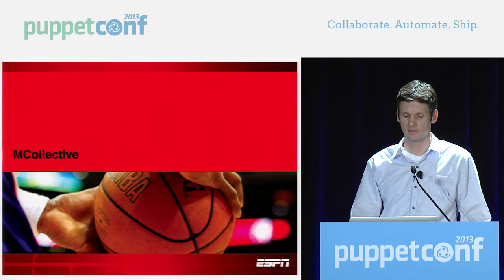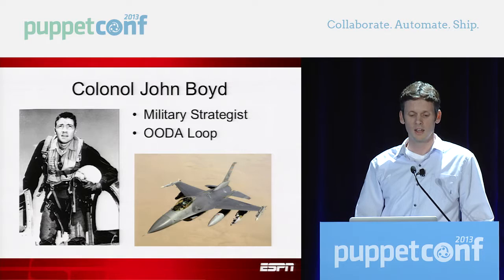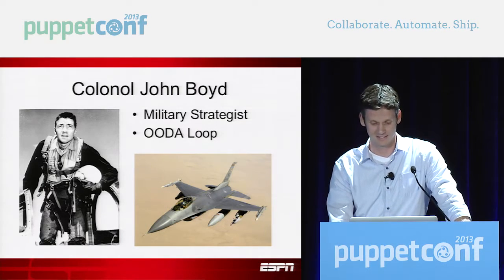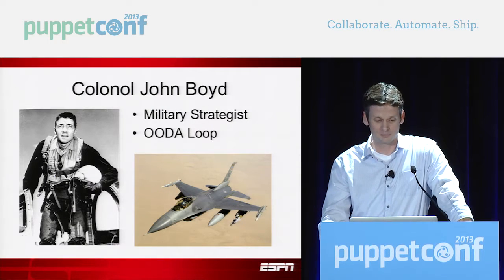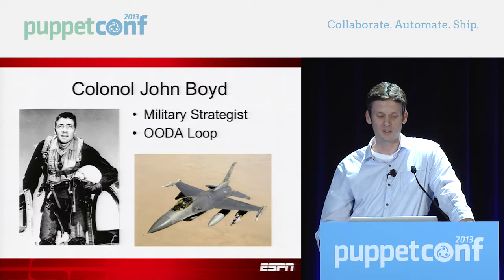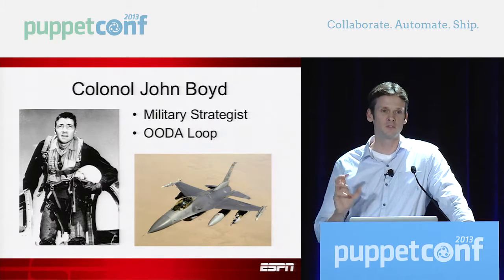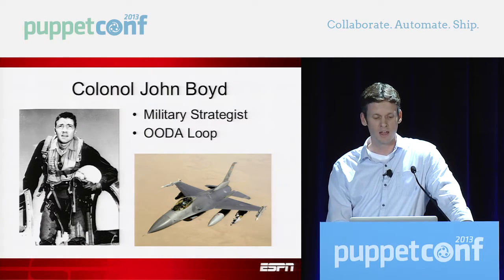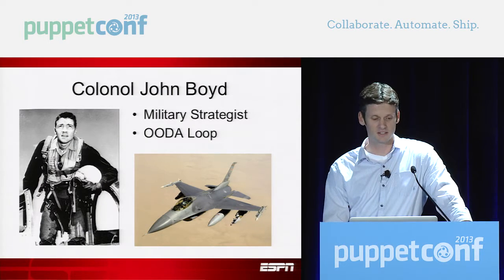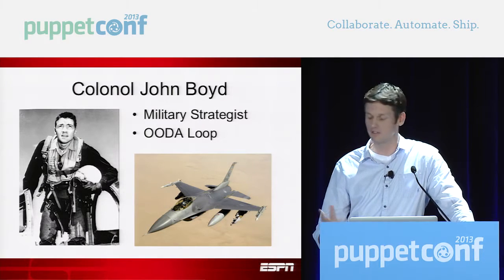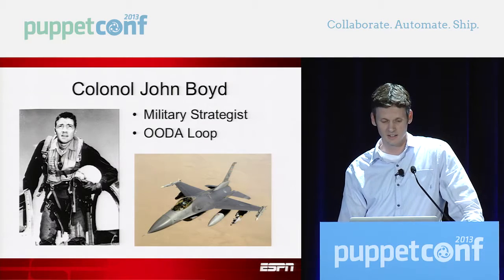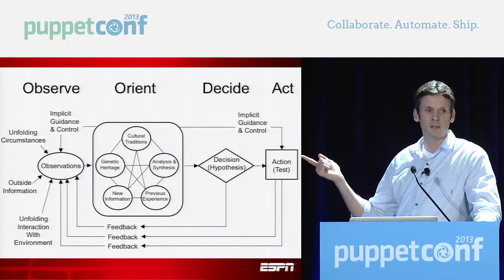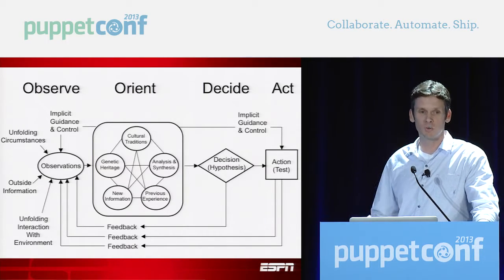Moving on to MCollective — we've got 12 minutes so I'll go through this fairly quickly. Does anybody know Colonel John Boyd? He was a military strategist who came up with the OODA loop — or decision cycle. The whole idea is that you observe your environment, make decisions based on those observations, and then act upon them. Very simple in concept but very powerful when you start applying it to IT. He applied this to fighter jets, and his theories were an influence on the design of the F-16 and F-18 series. The OODA loop is: observe, orient, decide, and act. As I talk about MCollective, I'm going to map it to this — it's a whole theory of how you do things fast, how you get things done, and how you understand what you're doing as you're getting it done.